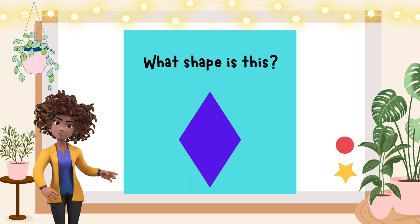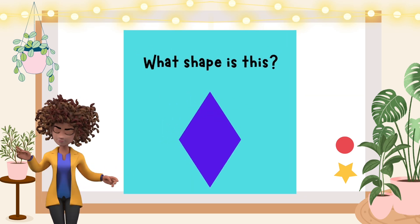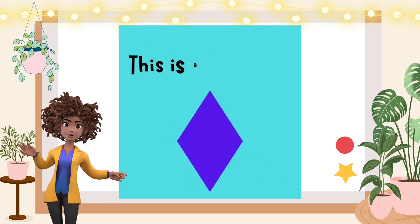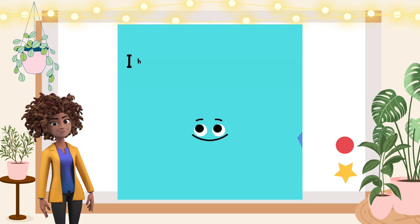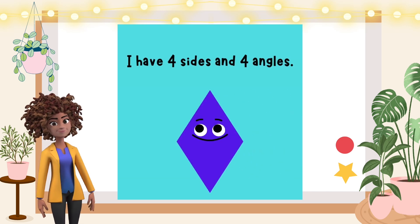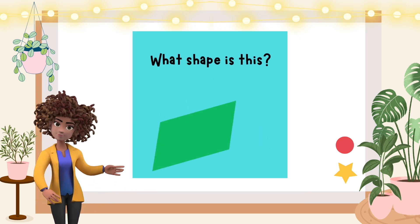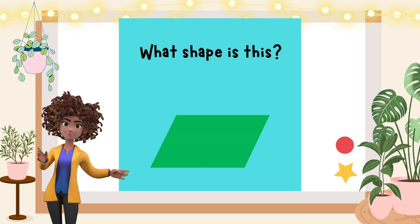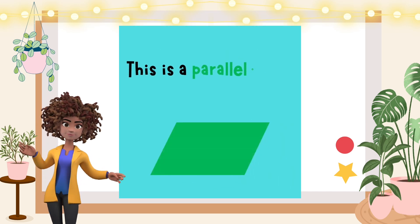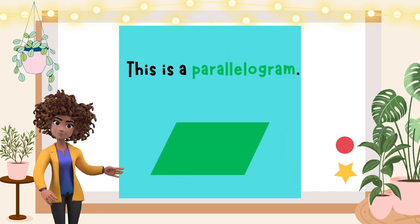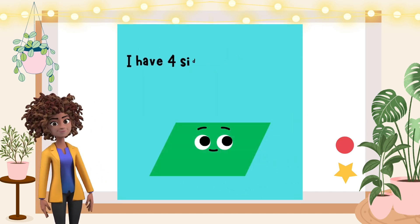What shape is this? This is a rhombus. I have four sides and four angles. What shape is this? This is a parallelogram. I have four sides and four angles.